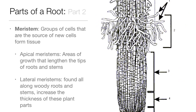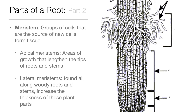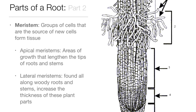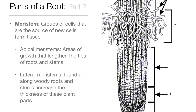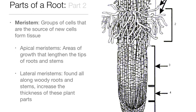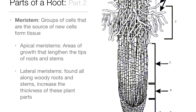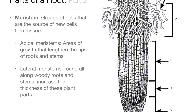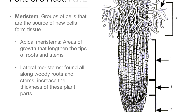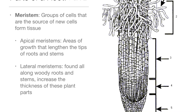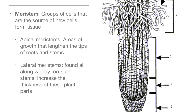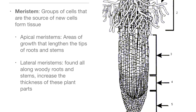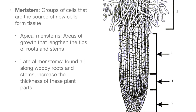Meristems are groups of cells that are the source of new cells and form tissue. Apical meristems are areas of growth that lengthen the tips of roots and stems. Lateral meristems are found all along woody roots and stems and increase the thickness of these plant parts.